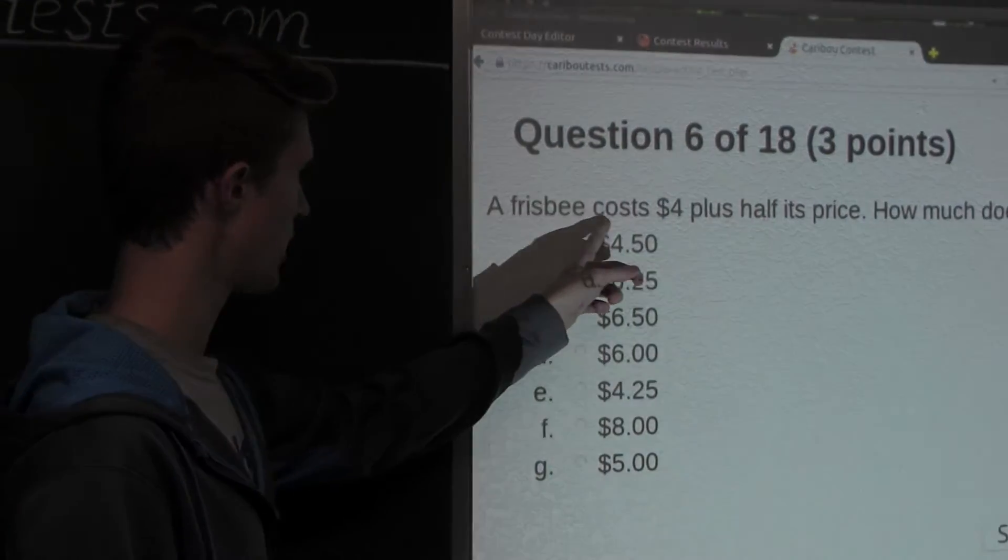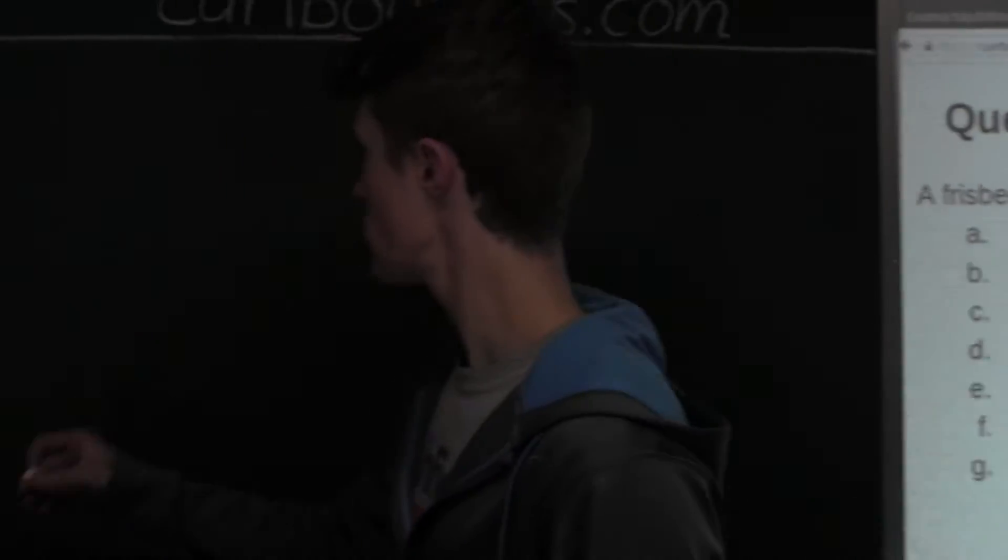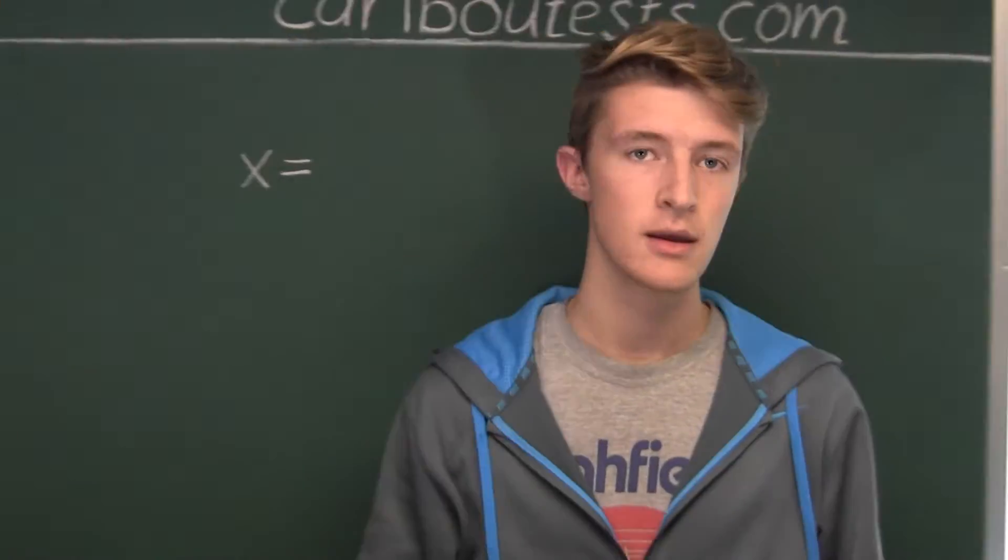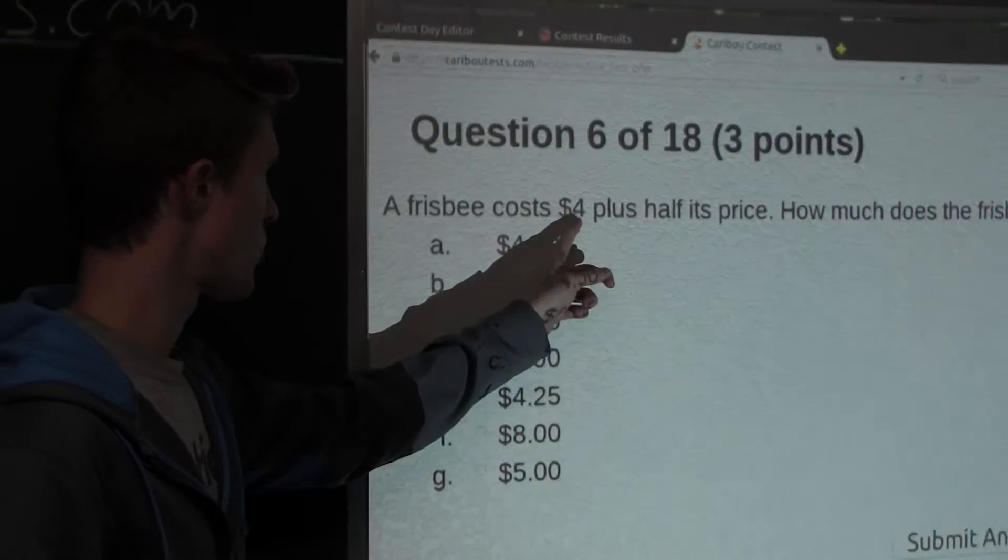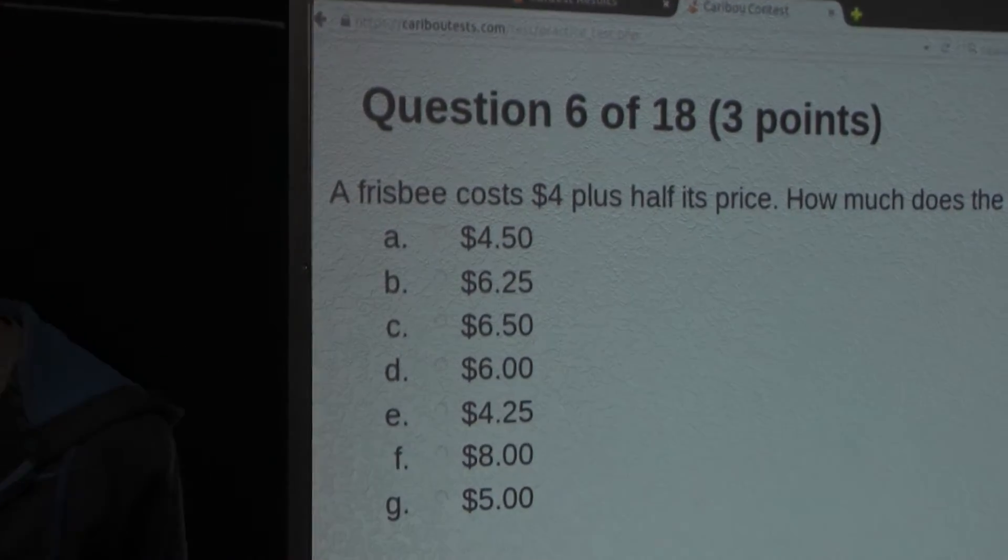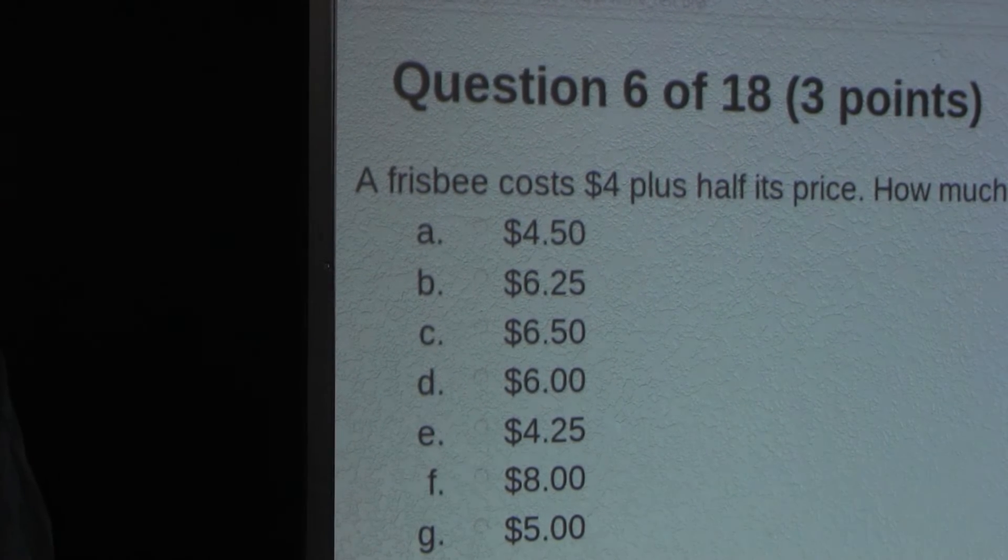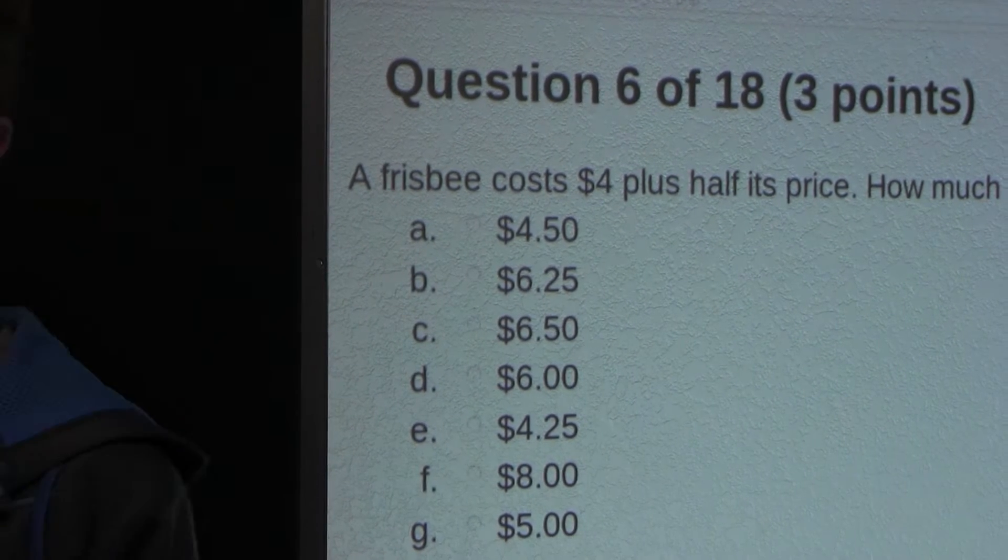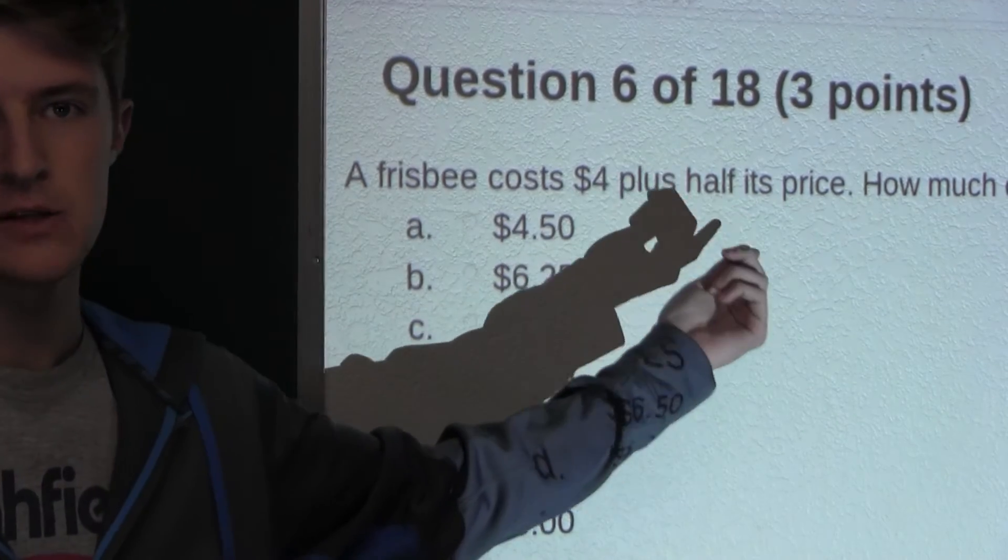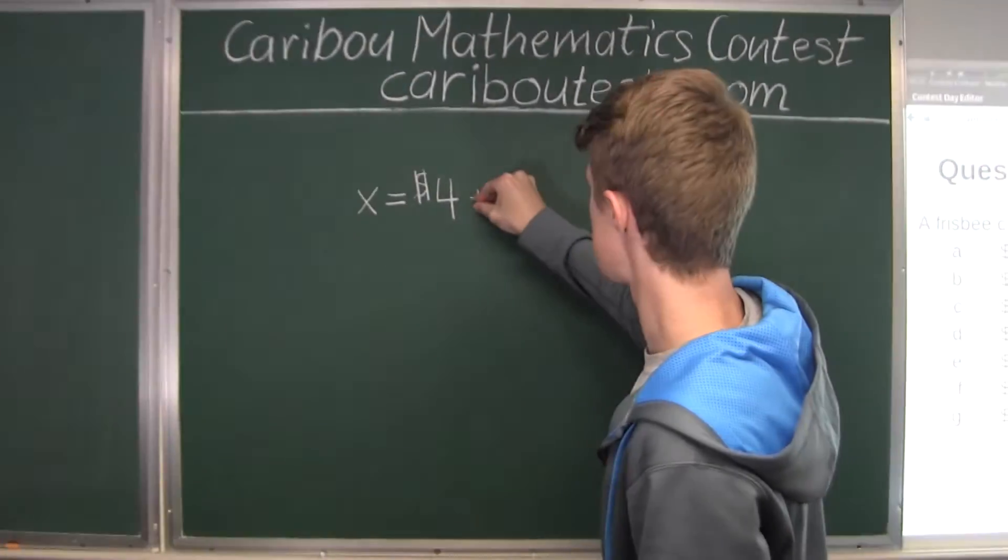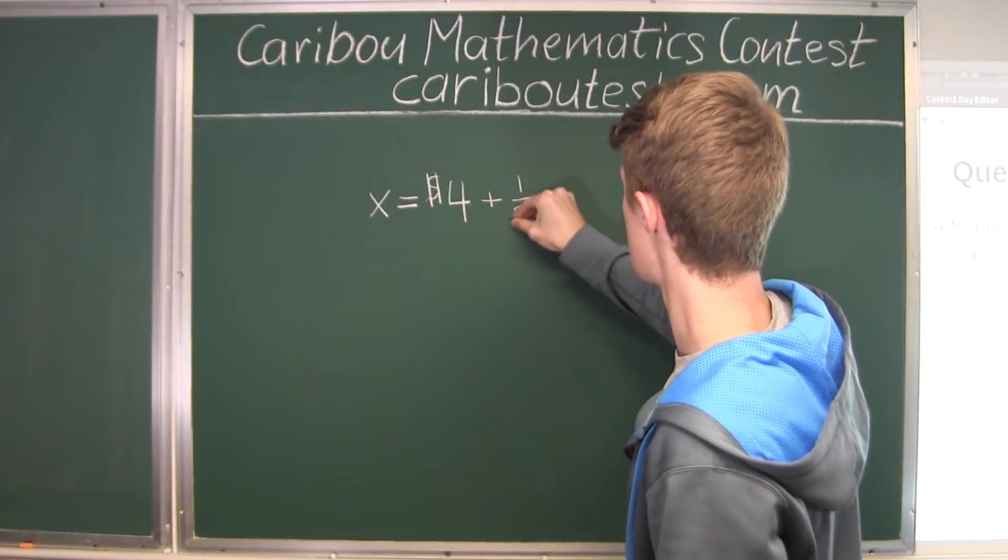So it says a frisbee costs, so x is equal to, and then it says $4 plus, so we have $4 plus half its price. And we know the price is x, so plus 1 over 2x.